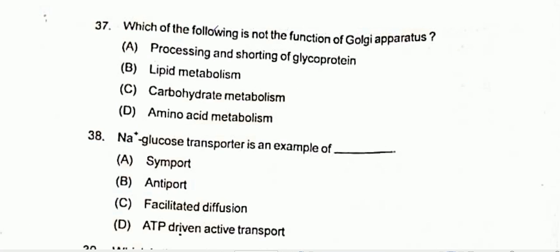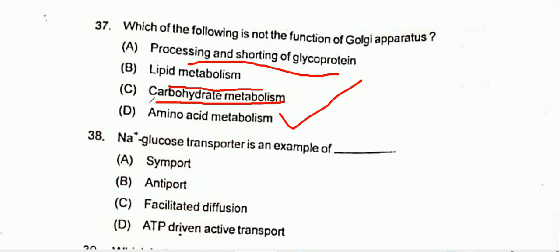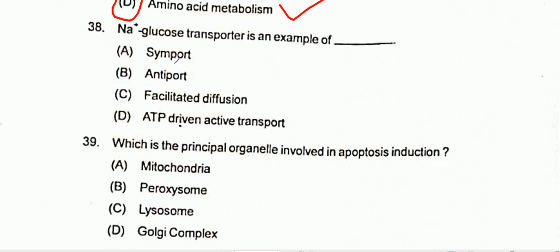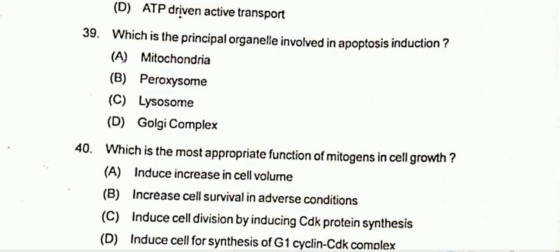Question 37: Which of the following is not a function of the Golgi apparatus? The Golgi apparatus performs processing and sorting of glycoproteins, lipid metabolism, and carbohydrate metabolism — but not amino acid metabolism. Option D is correct. Question 38: Na⁺/glucose transporter is an example of symport. Option A is correct. Question 39: Which is the principal organelle involved in apoptosis induction? Option A is correct.